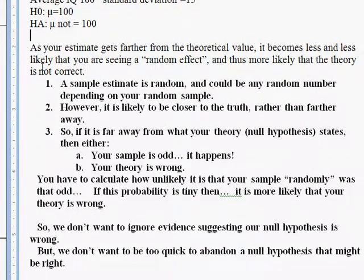So as we discussed, as your estimate gets farther away from this null hypothesis value, this theoretical value you're testing, it becomes less and less likely that you are seeing just some random effect. There is random variation in samples, but the farther and farther away your random sample gets from what your null hypothesis says, it gets less and less likely that that's just a random effect, and maybe there's some other good reason why you're getting an estimate so far away.